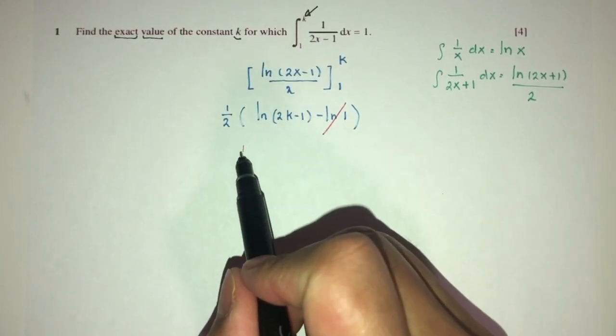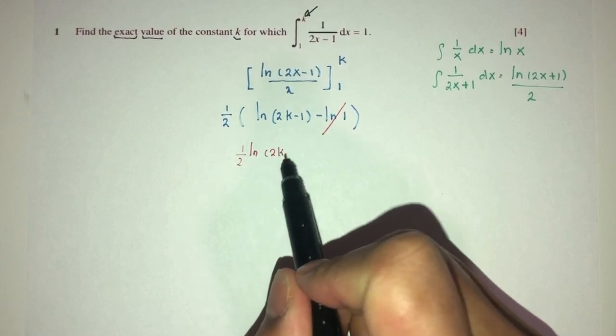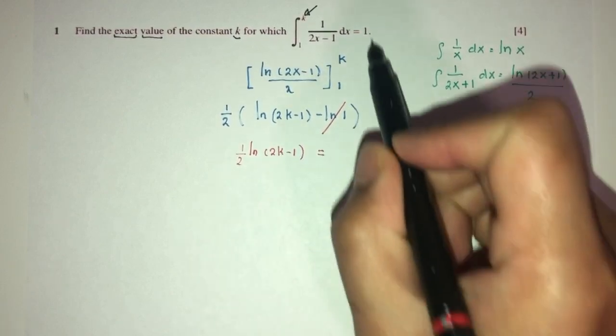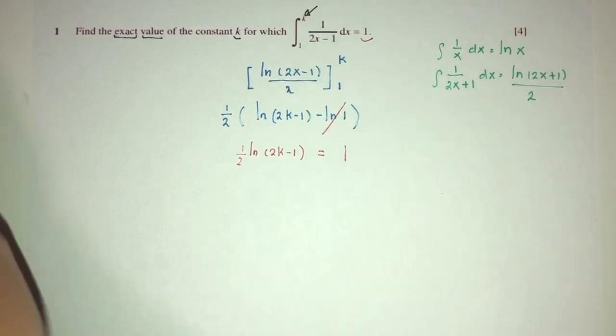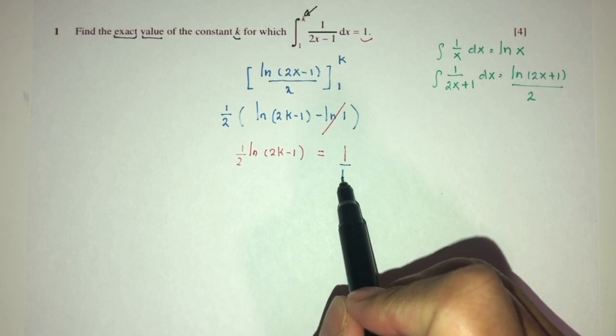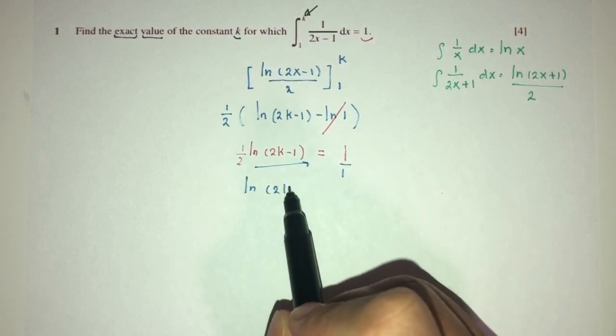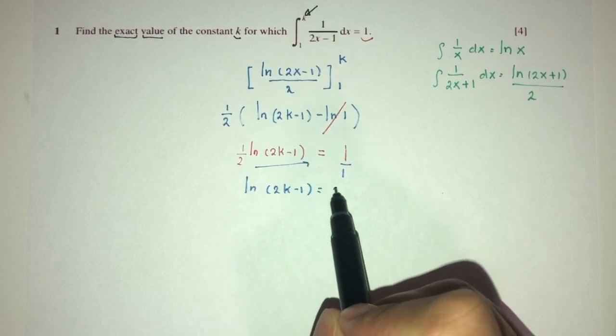We have half of ln of 2k minus 1 is supposed to give you 1. Let's find the value of k. First thing first, let's cross-multiply. Send this 2 on top. You will have ln of 2k minus 1 is equal to 2.